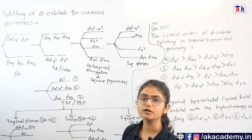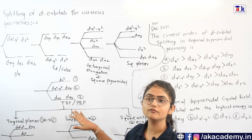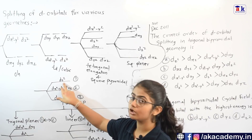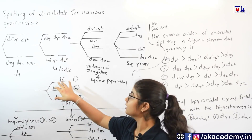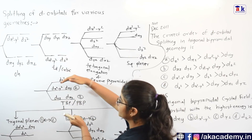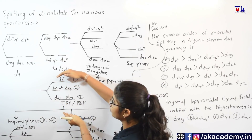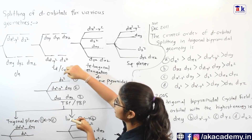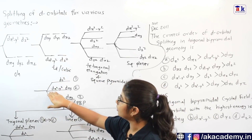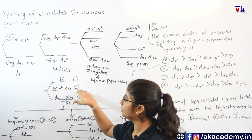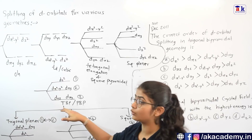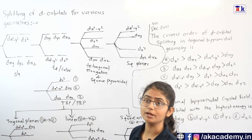Next, for trigonal bipyramidal and pentagonal bipyramidal geometry, the trick is that the Z-component-containing orbitals — DZ square, DYZ, and DXZ — should be arranged on the extremes. DZ square will have the highest energy, DYZ and DXZ will have the lowest energy, and the XY-containing orbitals — DX square minus Y square and DXY — lie in between.